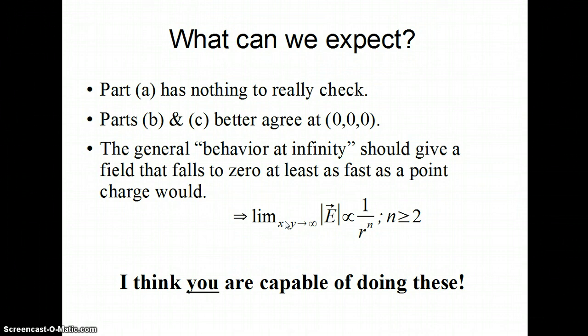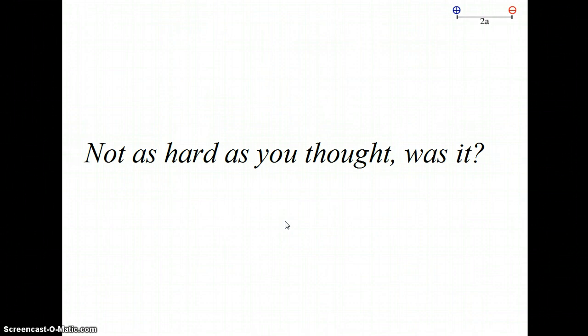I think you can actually take those limits. Getting part B finished and looking at whether B and C agree at the origin, and then checking those behaviors at infinity for parts B and C should be an interesting check to see if you're really following the algebra we do in this course. So now we've got all our answers, and we've got ways to check and see if they make sense. We're pretty much done. It wasn't as hard as you thought, was it?